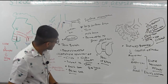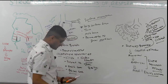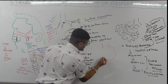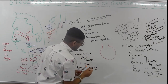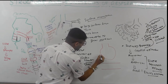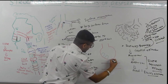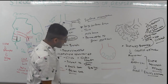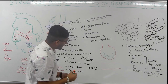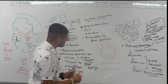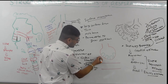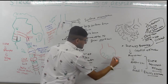Let's talk about the blood-air barrier. In the alveoli, you have type 1 pneumocytes — also called type 1 alveolar cells. These are very large but very thin. They make up about 90% of the surface area and are the cells that actually participate in gas exchange.